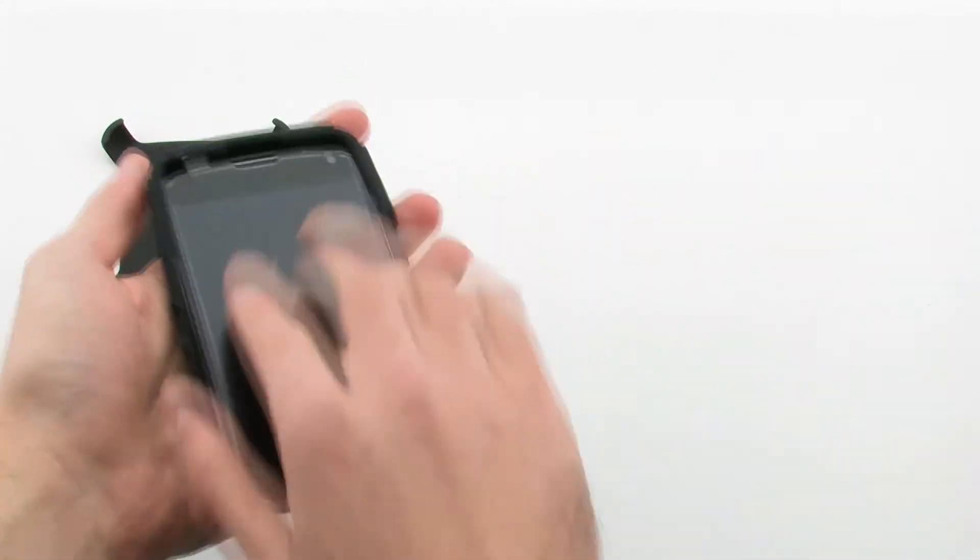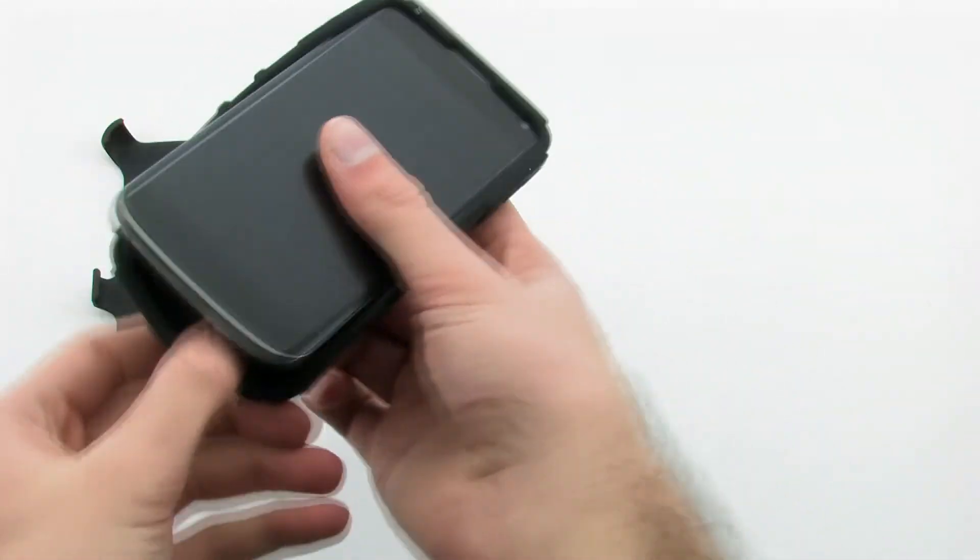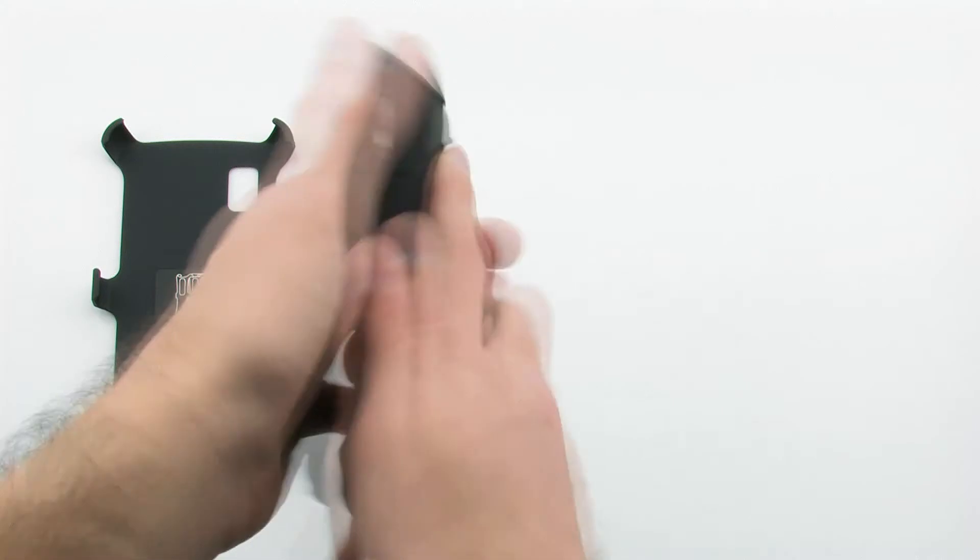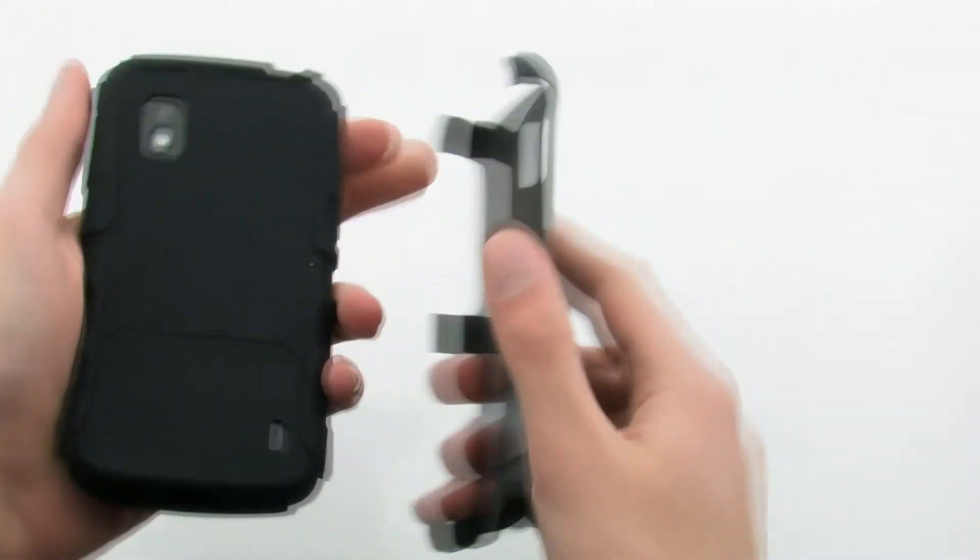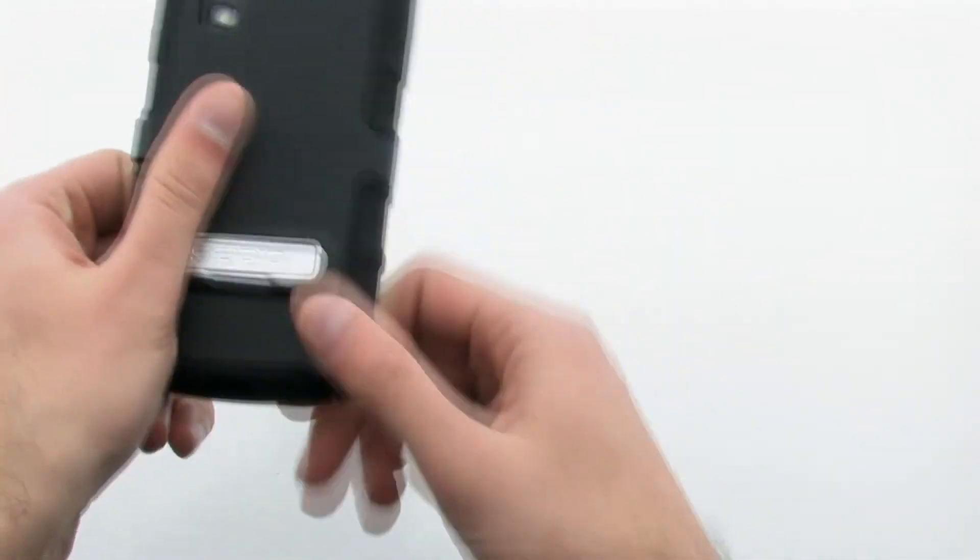To install the case, slide the top of the device into the top of the inner skin, then pull the corners over the bottom. Next, flip the device over and install the rear skeleton top first onto the back.